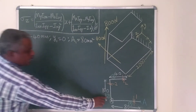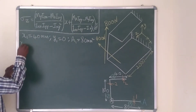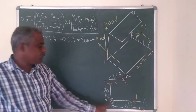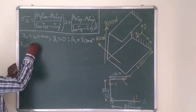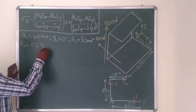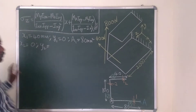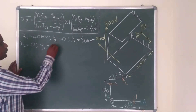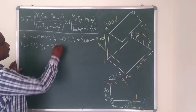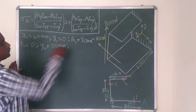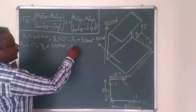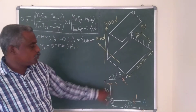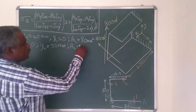Similarly for Section 2: X2 = 0, treating this as a line. Y2 = 100/2 = 50. Area of Section 2 = 100×2 = 200 mm².